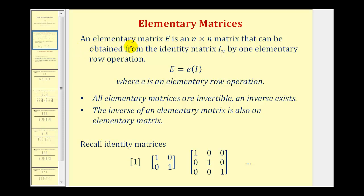An elementary matrix E is an n by n matrix, so it must be square, that can be obtained from the identity matrix by one elementary row operation. If little e is an elementary row operation, we can express an elementary matrix as big E equals little e of I.